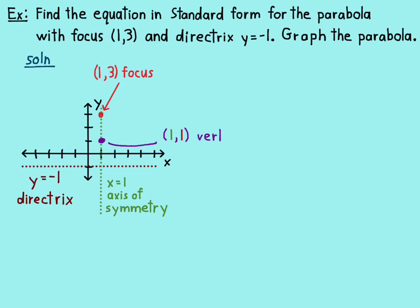The vertex is right there, halfway between the focus and the directrix, along the axis of symmetry. So that's the point (1,1).